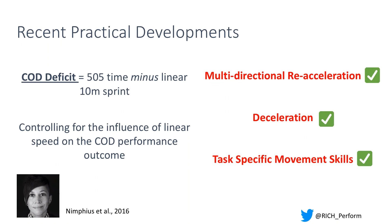That single variable is trying to tell us about multi-directional re-acceleration — although it's controlled for linear speed, it's not controlled for the multi-directional component in the acceleration test. It still considers the time from a deceleration perspective, and then it's obviously wrapped up in task-specific movement skills, which aren't completely separate from our redirectional capability, redirectional acceleration, or deceleration skills.